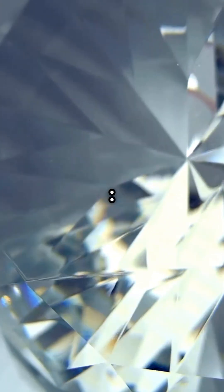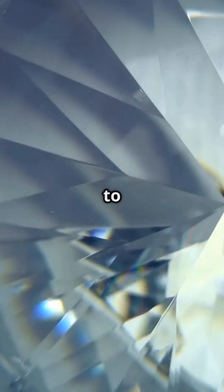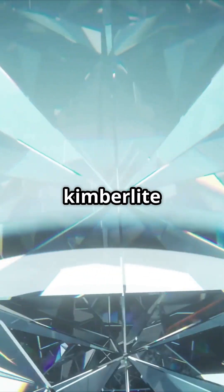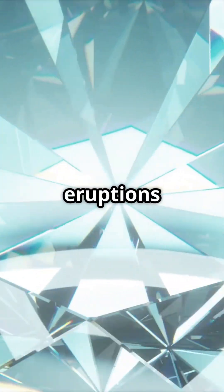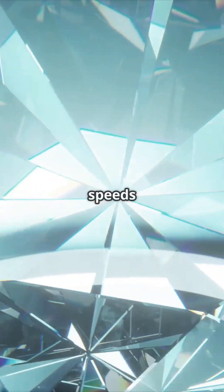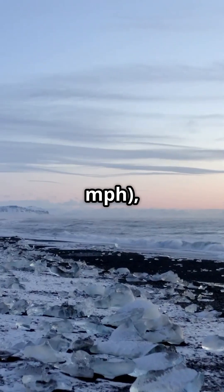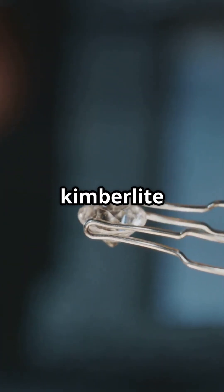The role of kimberlite: Once formed, diamonds are brought to the surface by very rare and powerful volcanic eruptions known as kimberlite eruptions. These eruptions propel mantle rock upwards at speeds of over 250 kilometers per hour (155 miles per hour), creating funnel-shaped structures called kimberlite pipes.